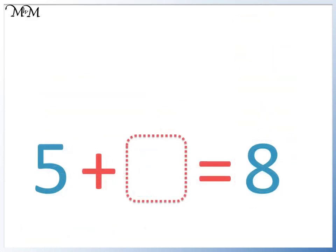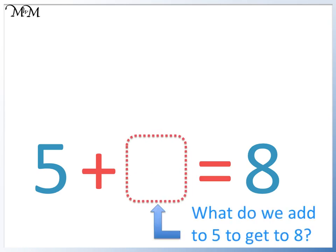Here we have the same sentence, but this time a different number is missing. To find this number we think, what do we add to 5 to get to 8?